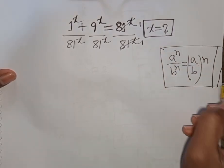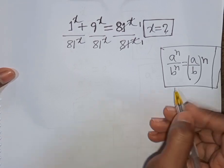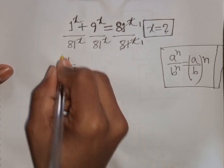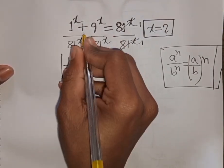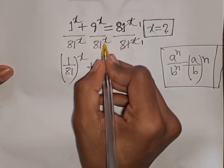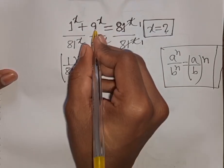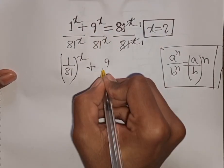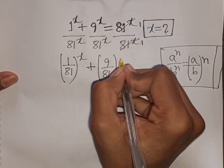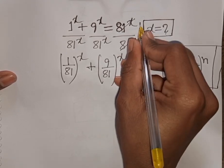That means when we have the same power but different base, we can apply this formula. So we can write here (1 over 81)^x plus (9 over 81)^x is equal to 1 divided by 1, which means it equals 1.